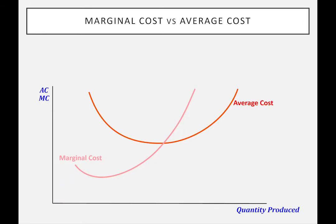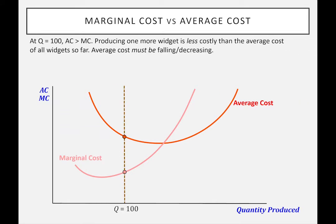I want to look at the idea of economies of scale using these cost curves, but I'm going to start with just a quick distinction between average cost and marginal cost using these curves that we've got. Let's say, for example, that we've got production of widgets at 100, and I've drawn the line to show what they are. As you can see, the average cost in this case is higher than the marginal cost, which means that producing one more widget — the 101st widget — is going to be less than the average cost up to the point of producing 100.